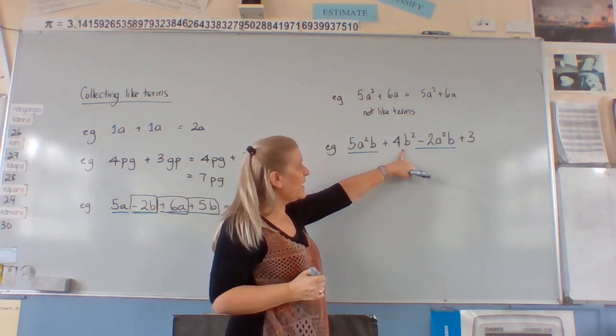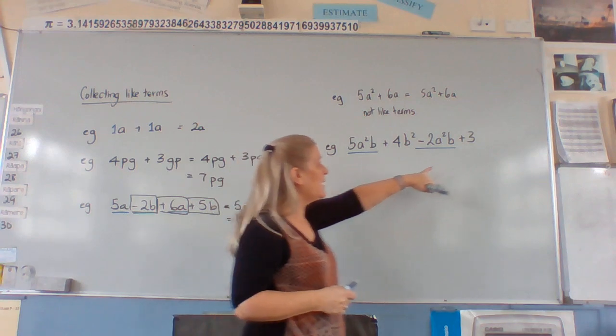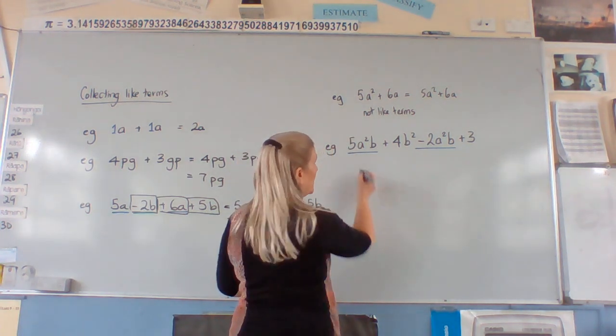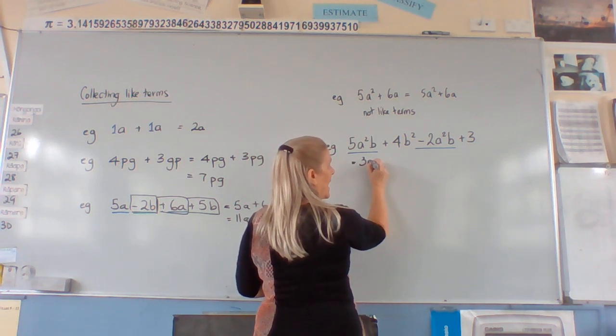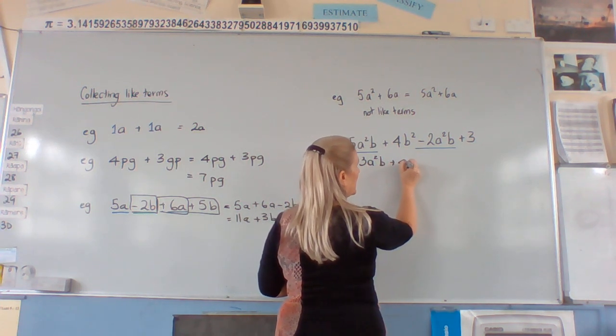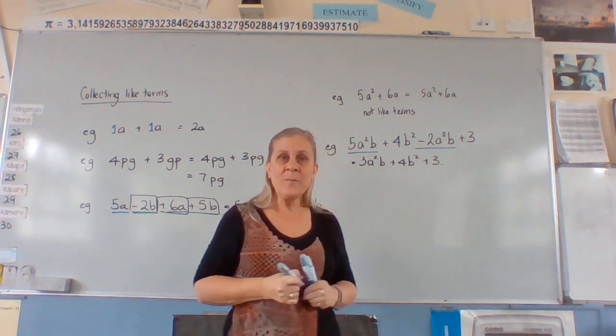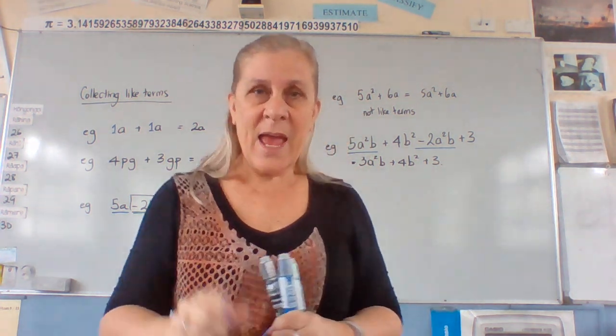This one doesn't have any A squared and it's a B squared anyway. This one hasn't got any A's and B's, so it's a term all by itself. So we got 3A squared B plus 4B squared plus 3. So look for that worksheet and have a go.